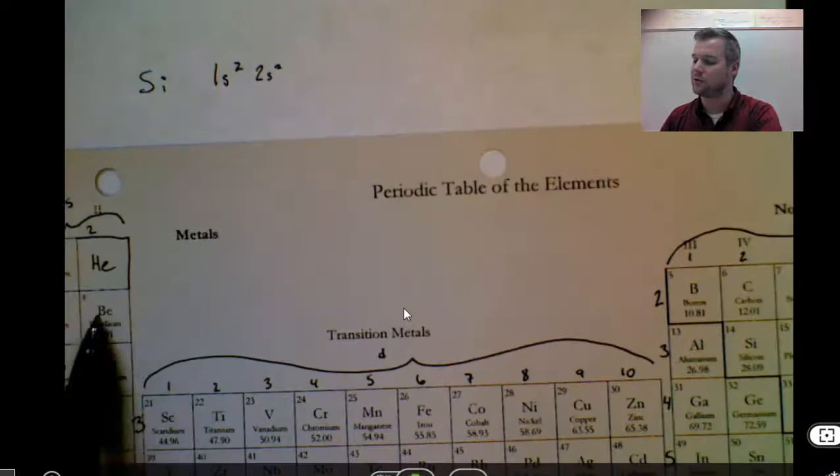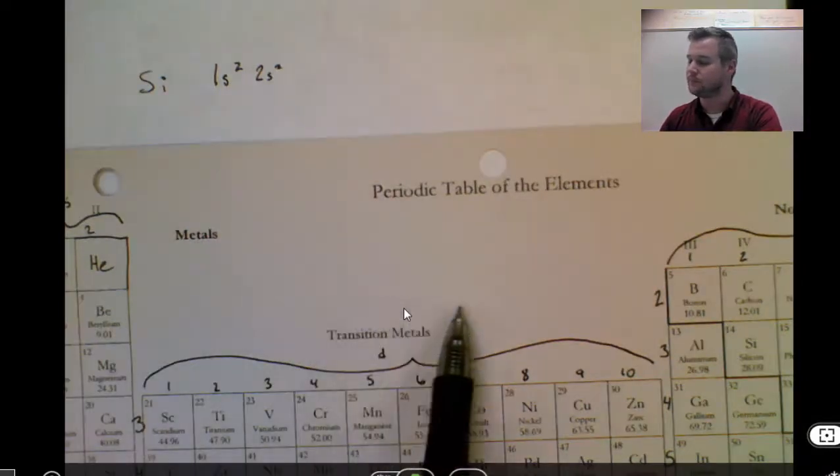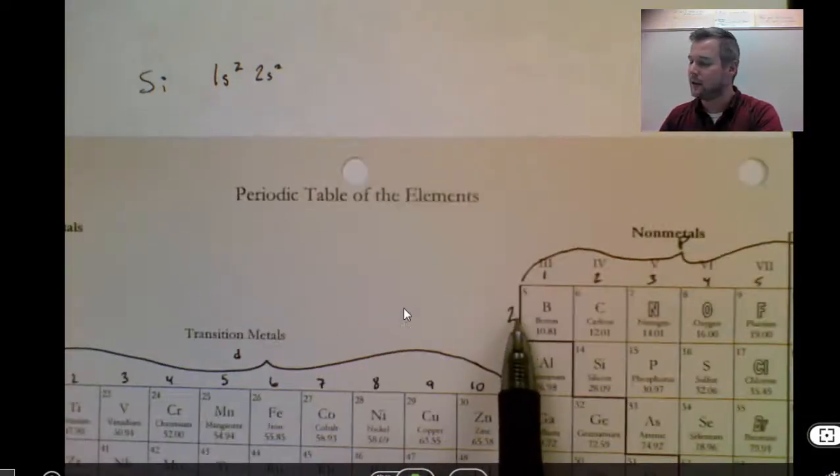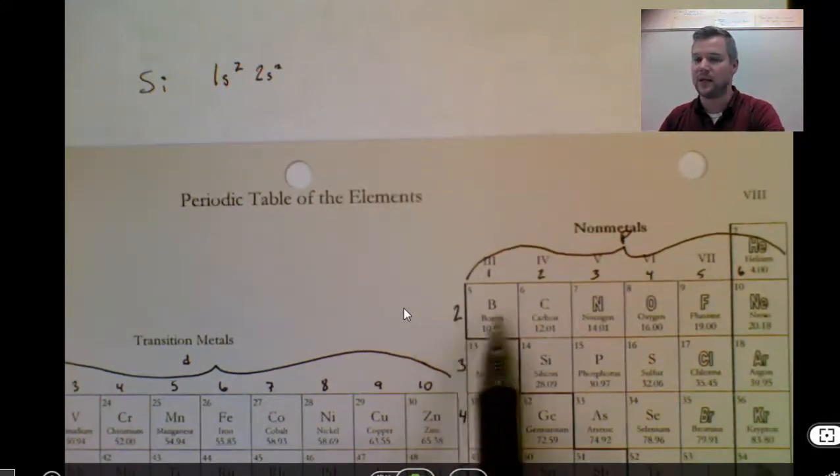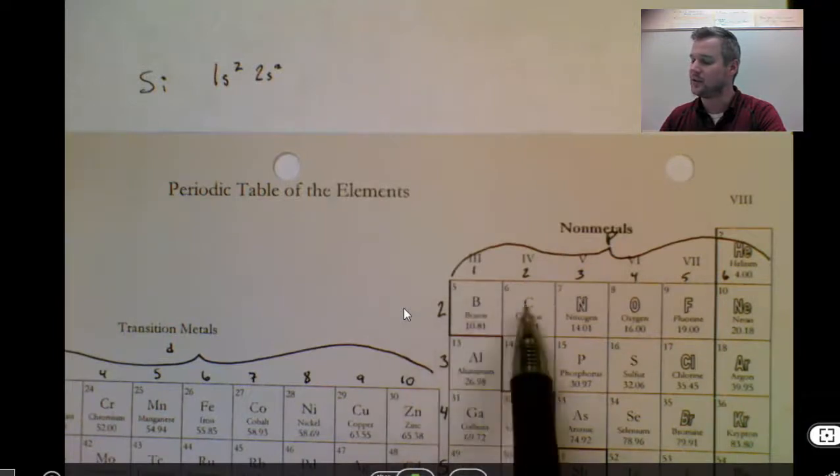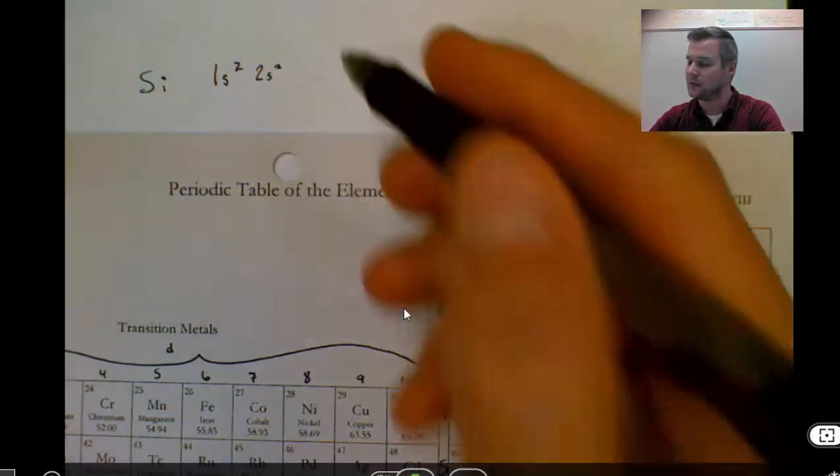But from beryllium, I'm going to go right, straight across, and run into boron. To the left of boron is the number 2. The letter is now P. I'm going to count the squares, 1, 2, 3, 4, 5, 6. So I'm going to write down 2P6.